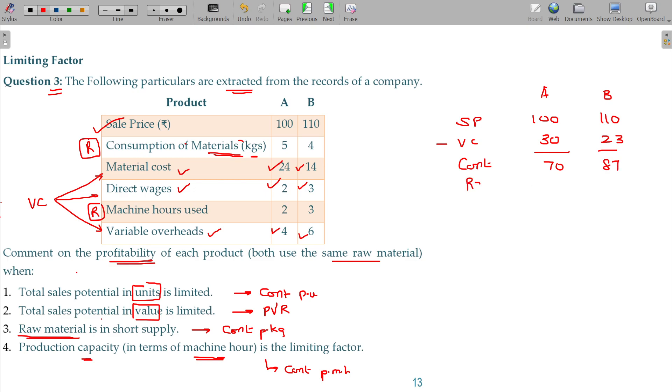The contribution ranking shows B will be the topper and A will be the second topper. So for the first question, when contribution per unit is considered, we can answer based on this.